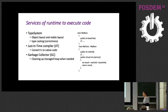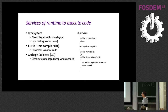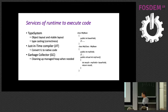JIT and GC are probably the most well-known components, as they mostly contribute to non-determinism, latency, and manifest performance issues. The type system is the central universe — it decides how big an object instance should be when you allocate it, what the vtable layout looks like, and whether your casts are correct. JIT consults the type system to generate code, and GC consults it when walking the object graph.